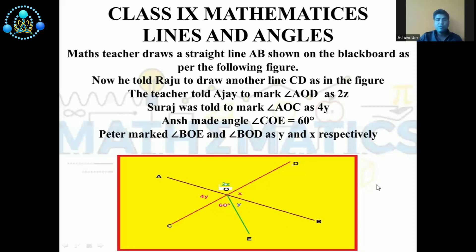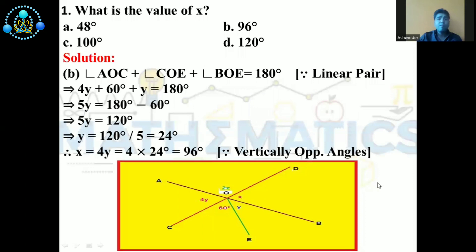Now we will discuss the first question: What is the value of X? There are four options — A: 48°, B: 96°, C: 100°, D: 120°. The correct option is B. Looking at the diagram, we find that angle AOC plus angle COE plus angle BOE equals 180 degrees.